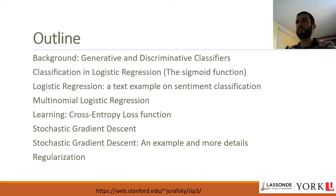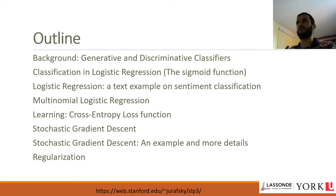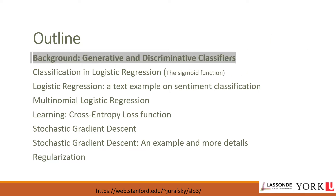The outline we will cover in this lecture includes: first, a brief background on generative and discriminative classifiers; then classification and logistic regression, including the sigmoid function; a logistic regression example on sentiment classification; multinomial logistic regression; the cross-entropy loss function; stochastic gradient descent with an example; and finally regularization.